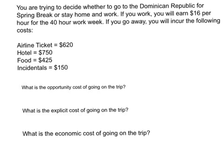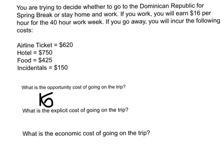You are trying to decide whether to go to the Dominican Republic for spring break or stay home and work. If you work, you will earn $16 per hour for the 40-hour work week. If you go away, you will incur the following costs: an airline ticket of $620, a hotel of $750, a food charge of $425, and incidentals of $150. The opportunity cost of going on this trip is working for $16 per hour for 40 hours, giving you an opportunity cost of $640.